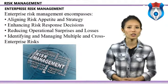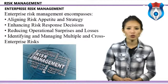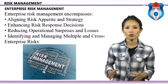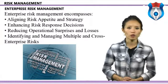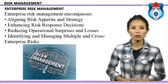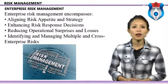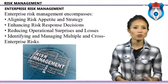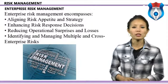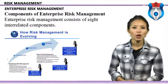Value is maximized when management sets strategy and objectives to strike an optimal balance between growth and return goals and related risk. ERM encompasses aligning risk appetite and strategy — management considers the entity's risk appetite in evaluating strategic alternatives and setting objectives. ERM also provides the rigor to identify and select among alternative risk responses, and facilitates effective responses to the interrelated impacts and multiple risks across the enterprise.